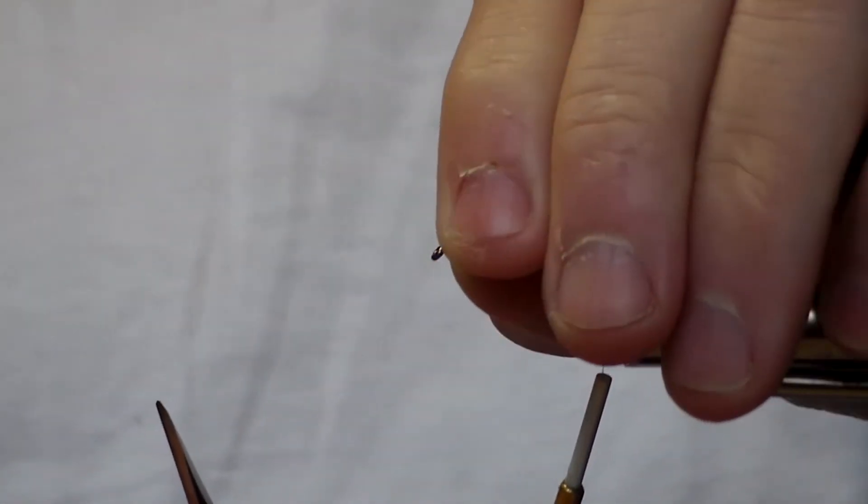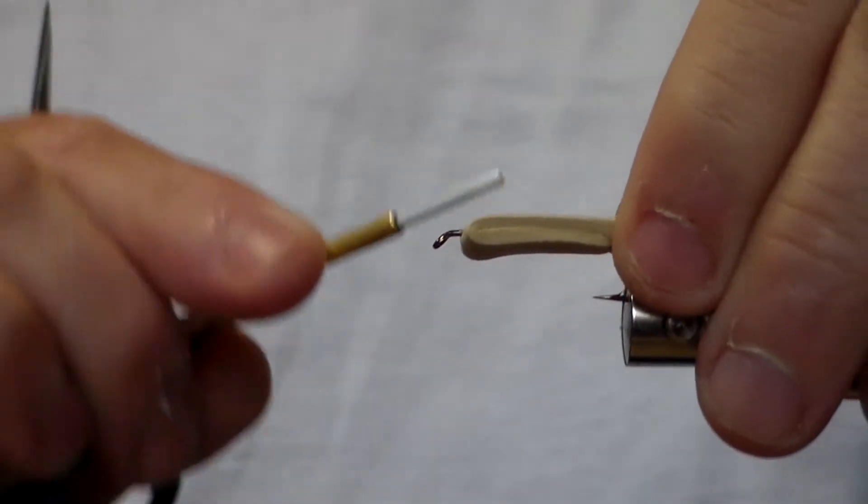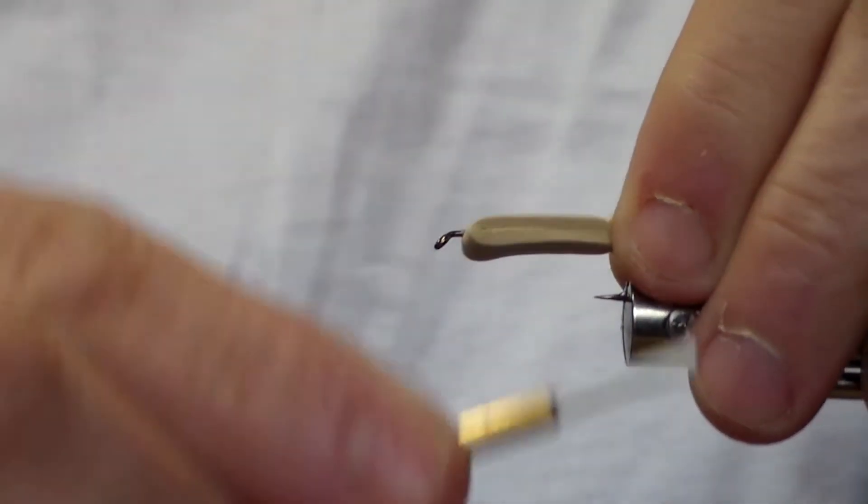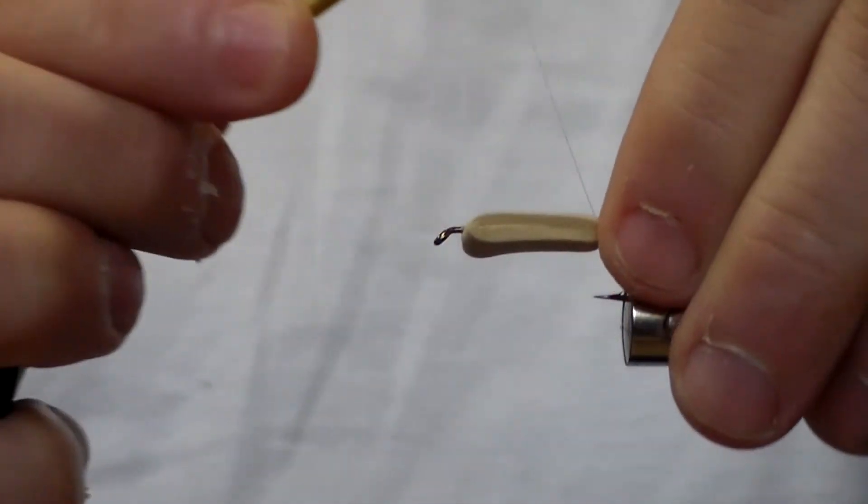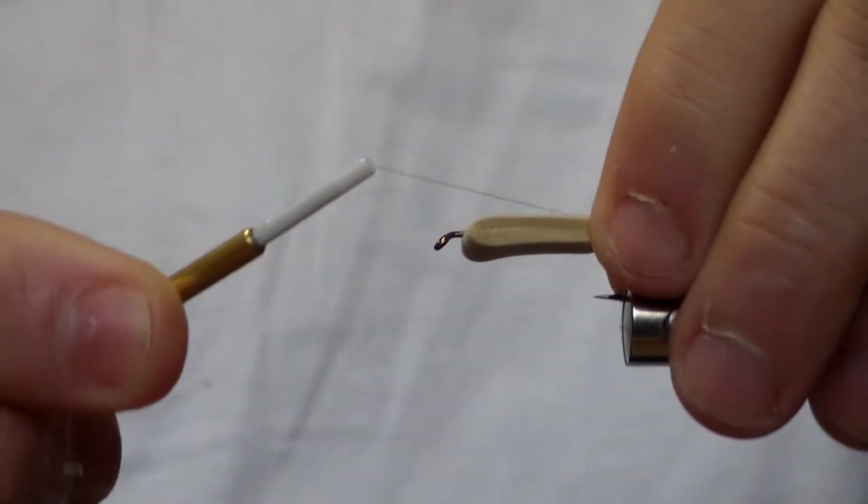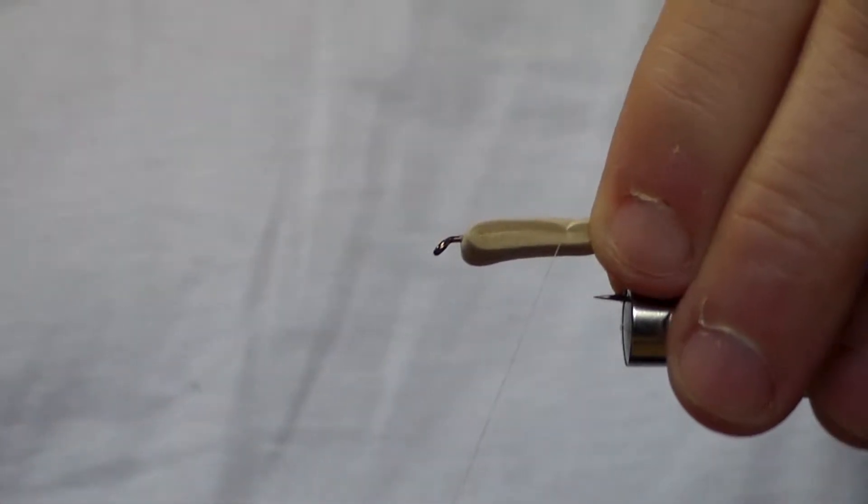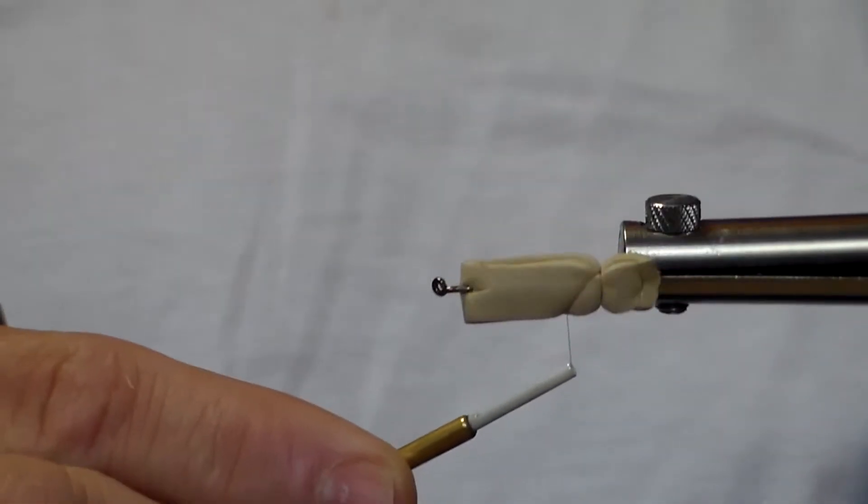We start to build our segmentation. So I take two wraps by the tail here. As you come up I'm going to cross. You want to make sure you watch carefully for your segmentation.